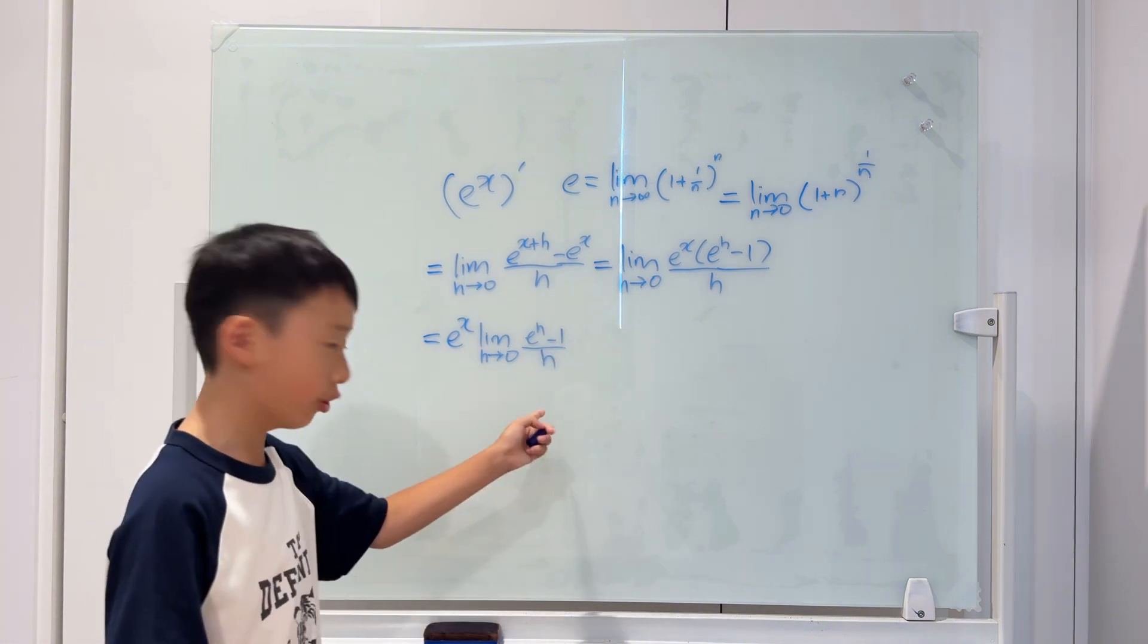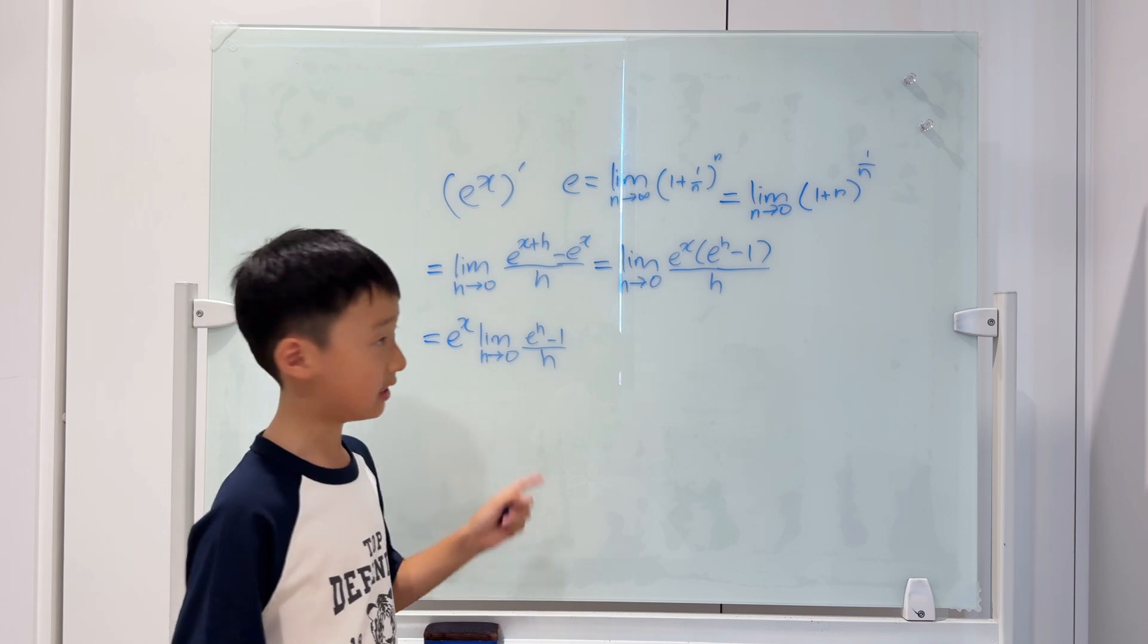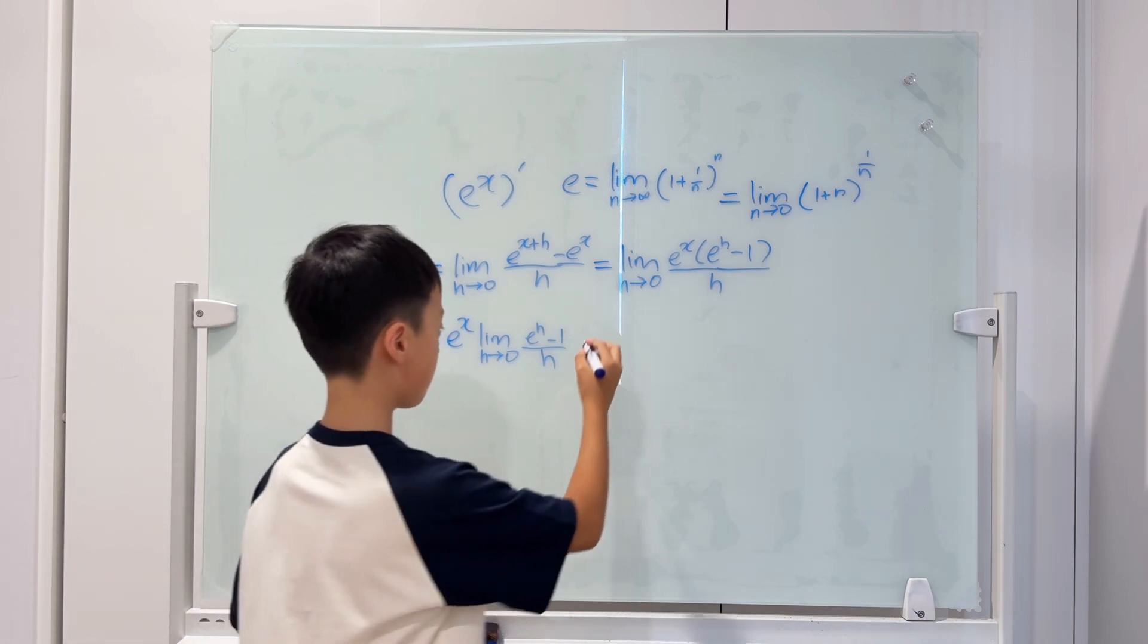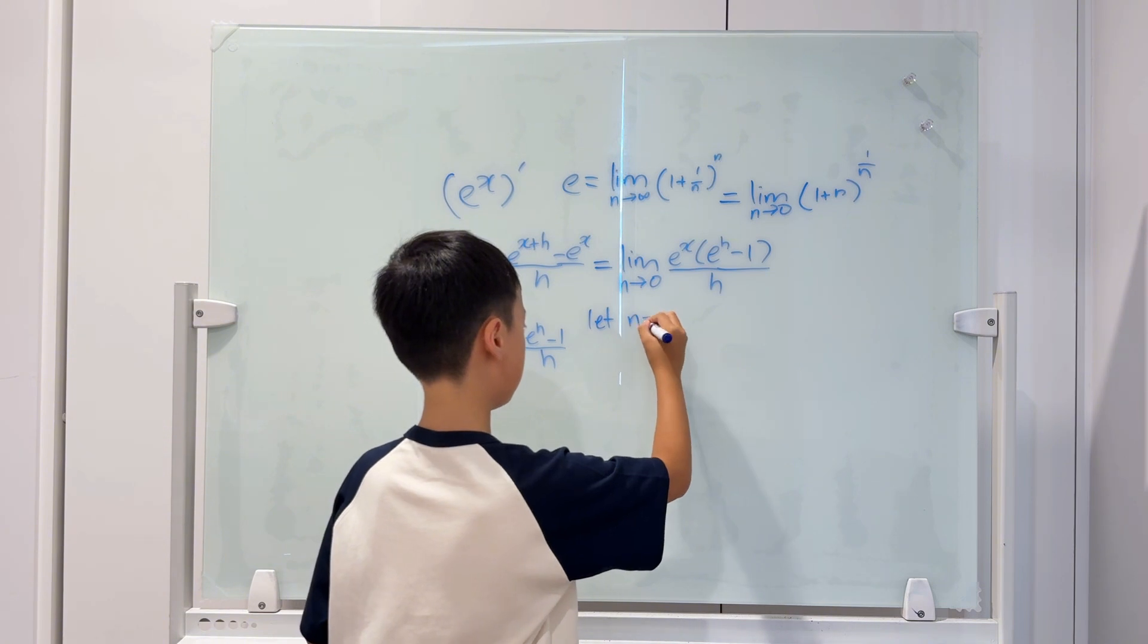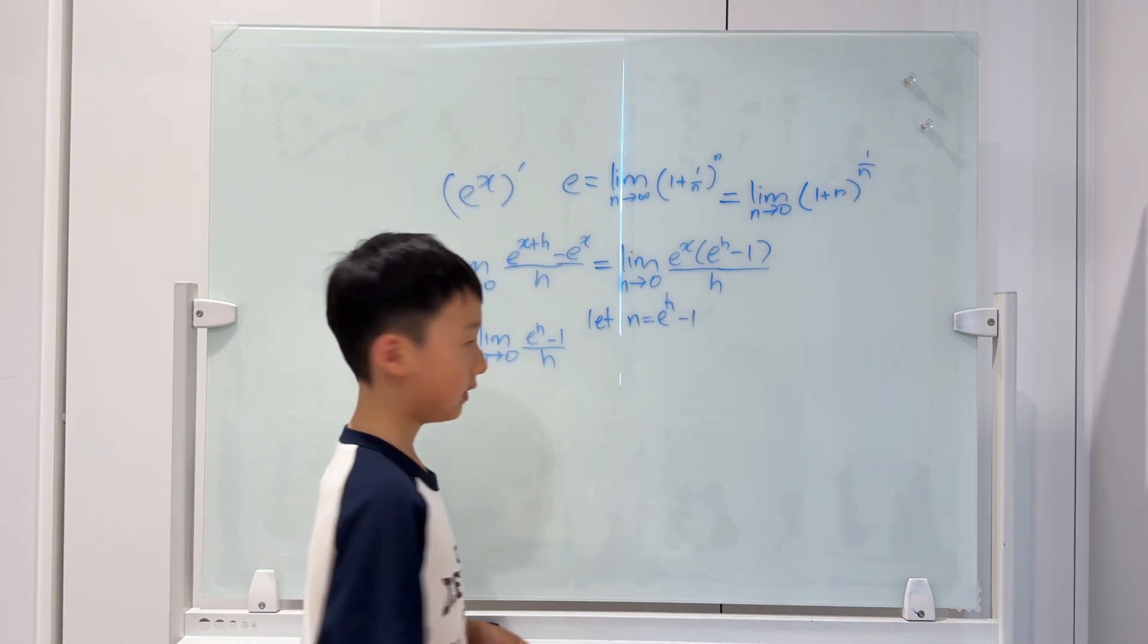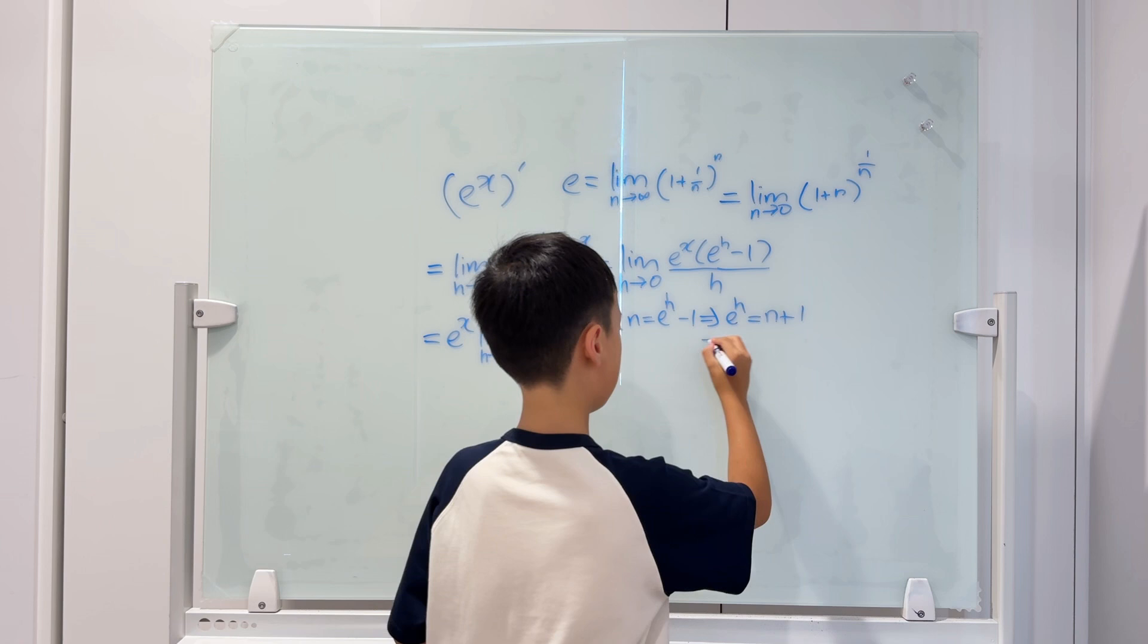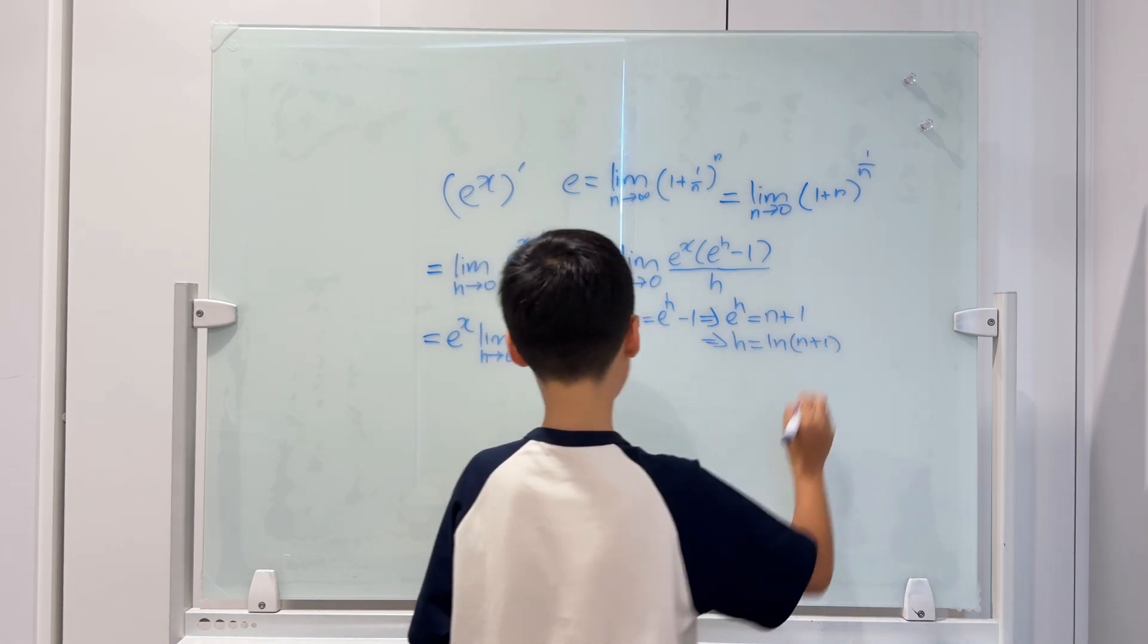Let's go all the way back here. We will have to try to manipulate this to make it look like this. We will let a simple substitution. We have to let n equals to e to the power of h minus 1. Now, e to the power of h equals n plus 1. So, h equals ln of n plus 1.